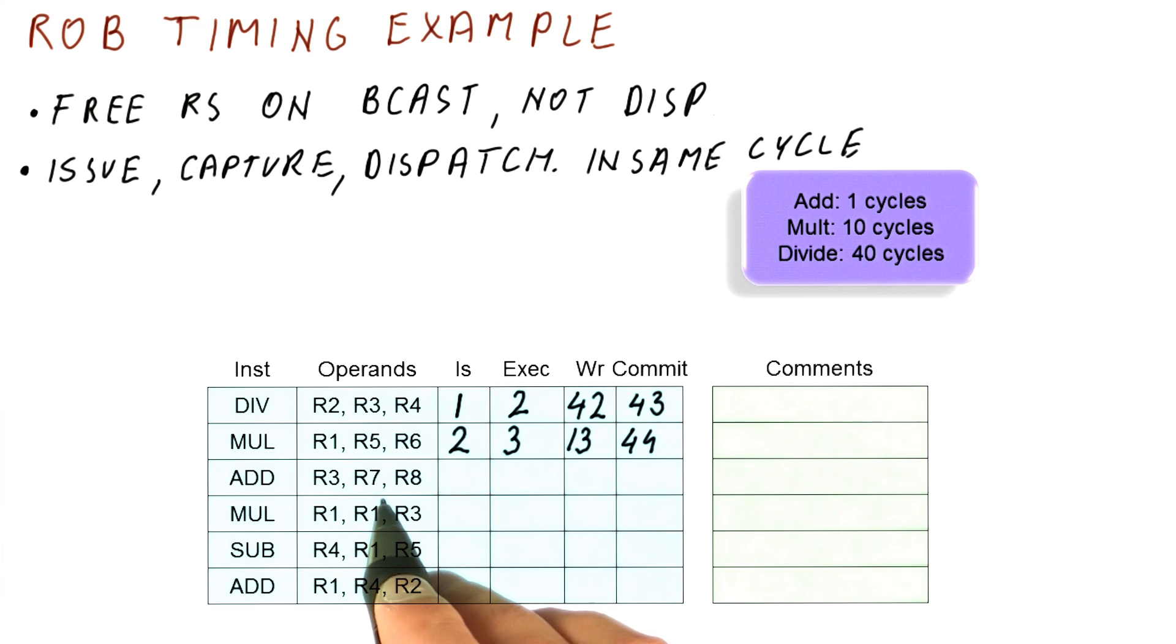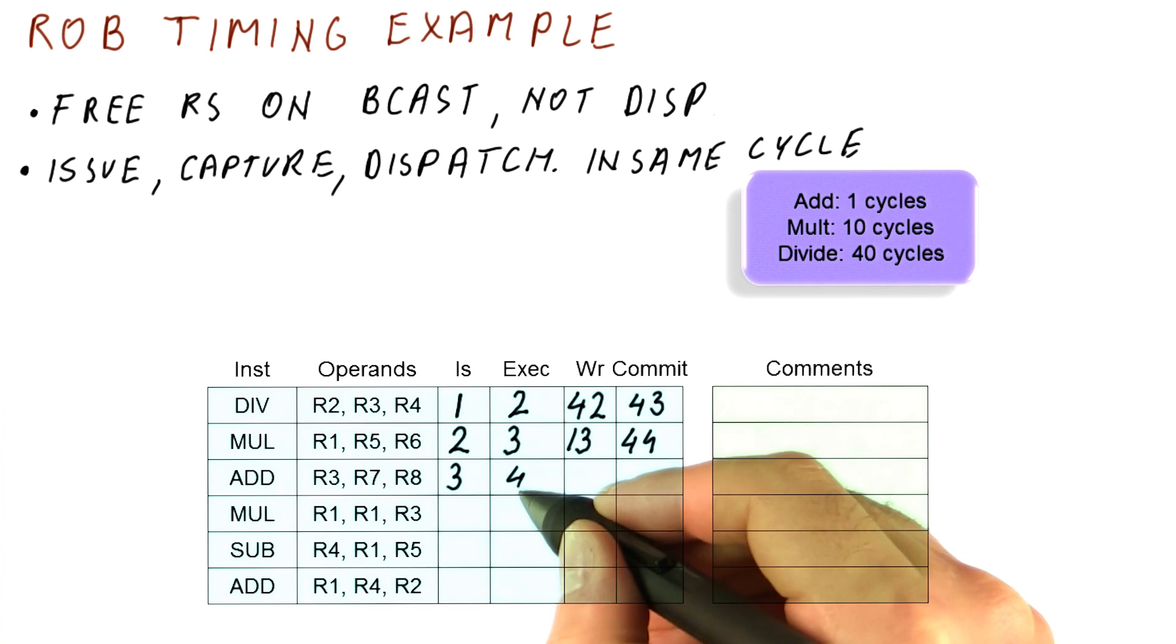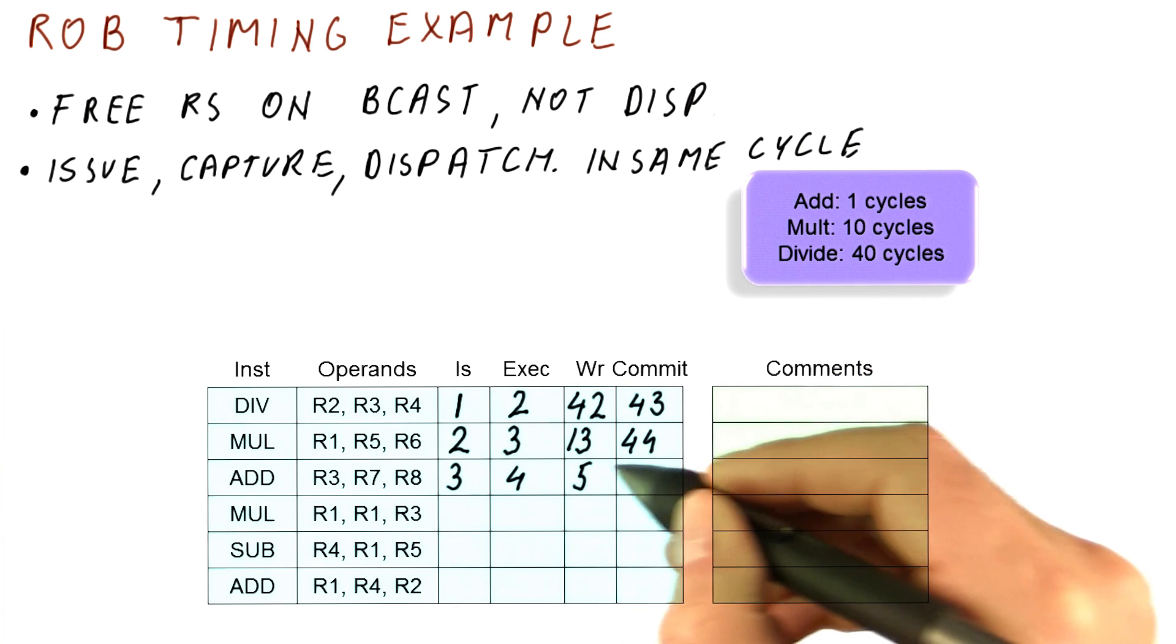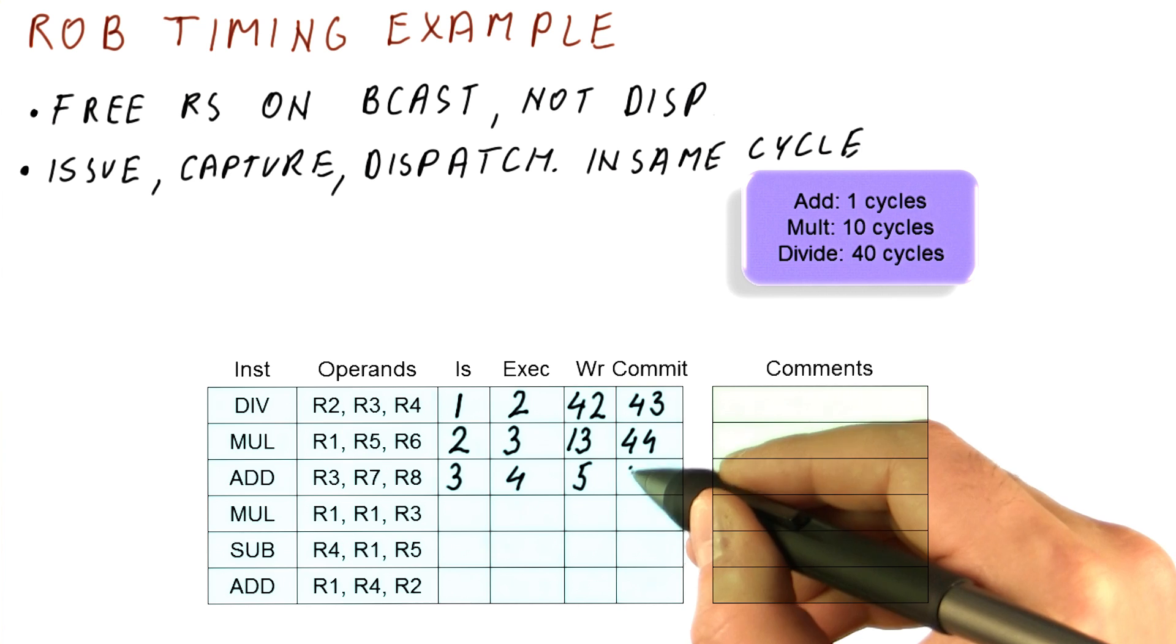Now let's look at this add here. It's using R7 and R8, so it will be executing right after it issues. We have add and subtract reservation stations. Remember, we have three separate reservation stations for that. So we will issue in cycle three, start execution in cycle four. Takes only one cycle, so we will write the result in cycle five. And now when do we commit this instruction in cycle 45?